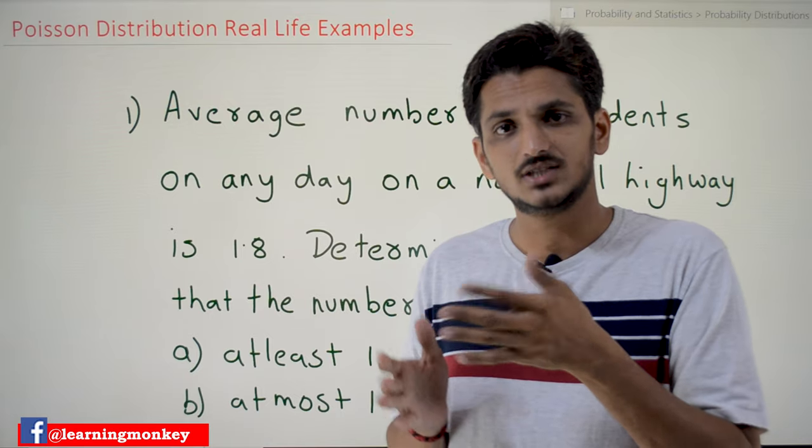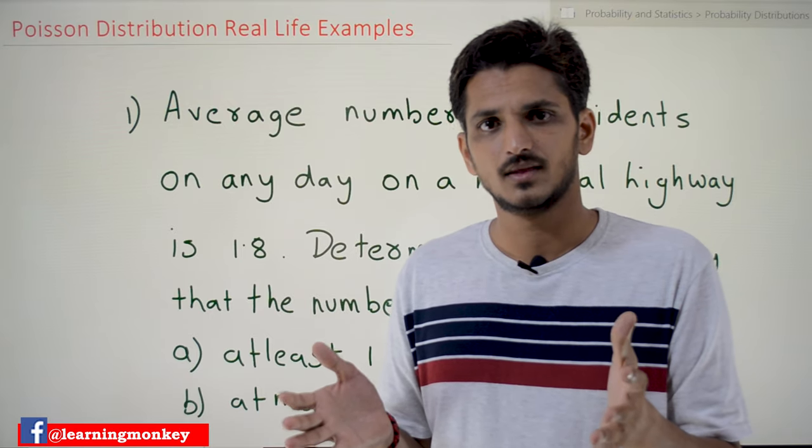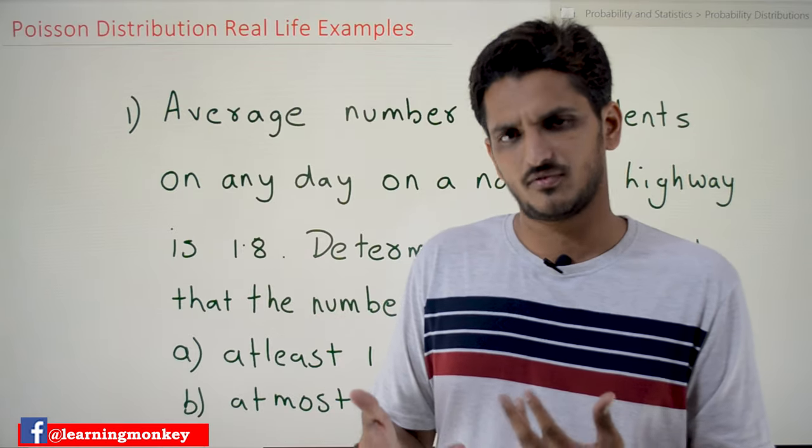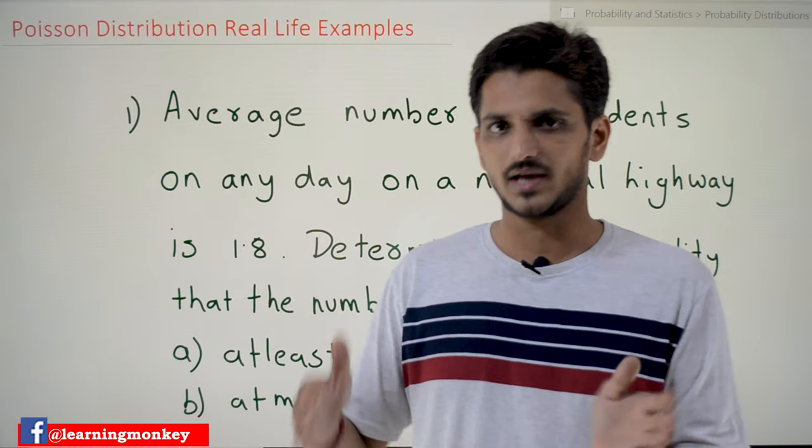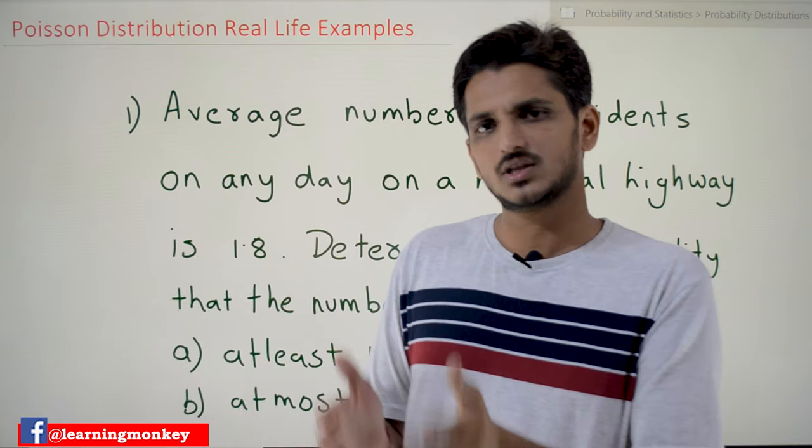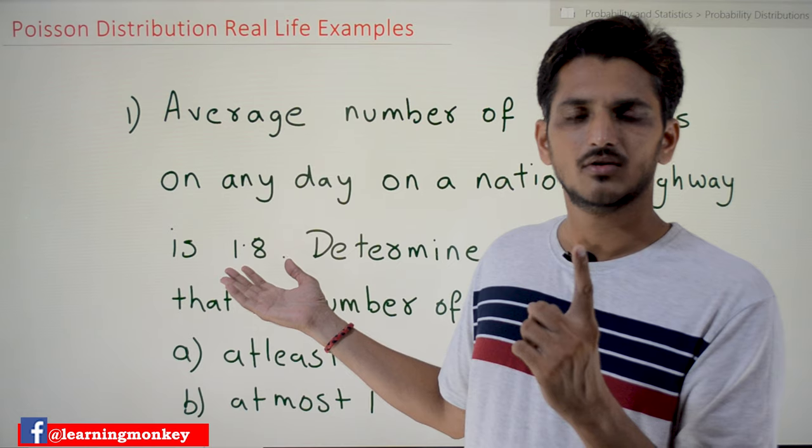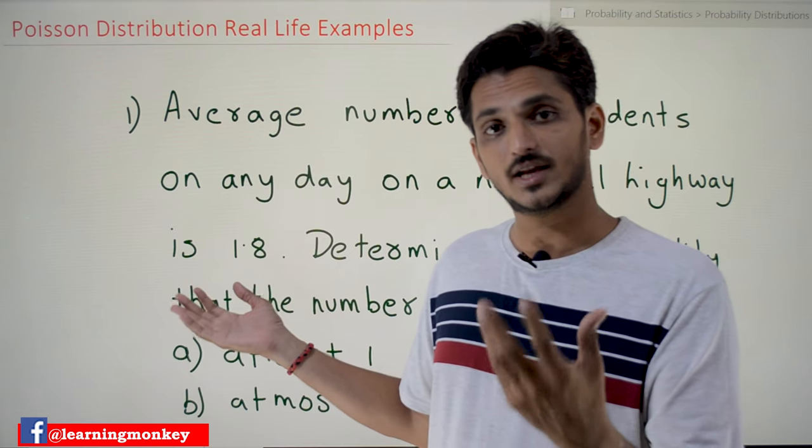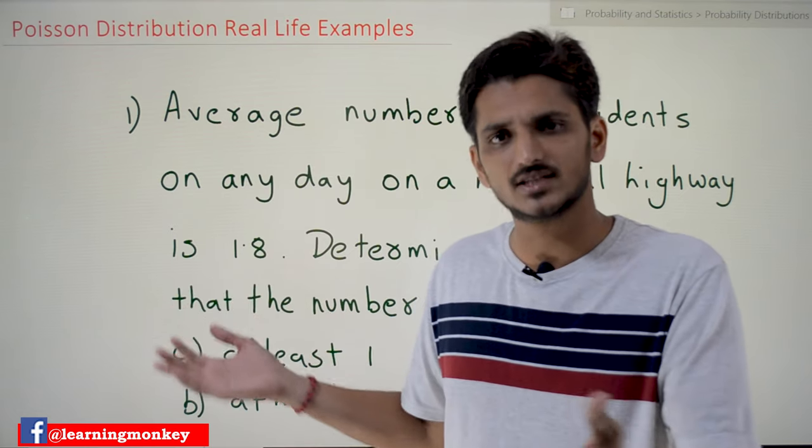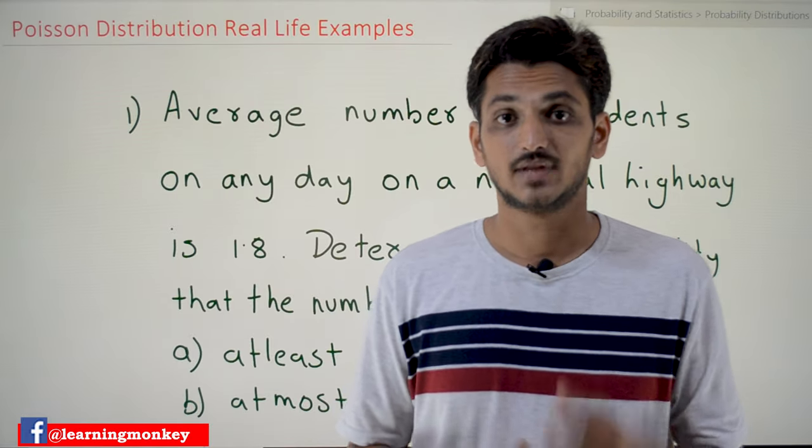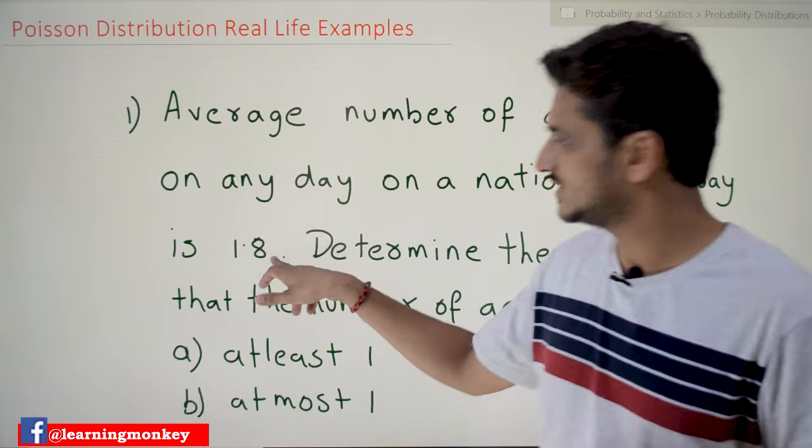But giving this value is possible because, on an average, if you are getting for an entire year some number of accidents, you can convert that into average for one day or one month. If you are getting 60 accidents on a highway, you can say on an average you are getting 2 accidents per day. So that's why giving lambda value is very easy in our real-life examples.